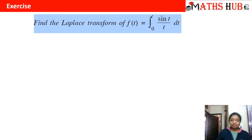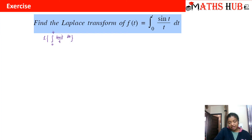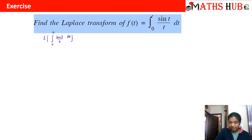Let us do another question. We have to find the Laplace transform of the integral from 0 to t of (sin t / t) dt. Your steps should be correct and you need to apply the minimum number of steps. Here, the basic function sin t is first getting divided by t, and then we are taking the integral from 0 to t — so two properties are being applied: division by t and the integral property.